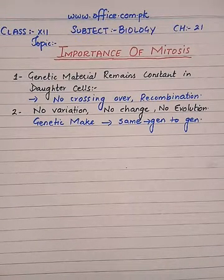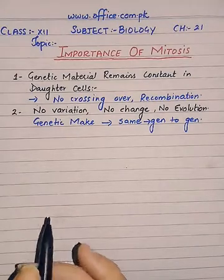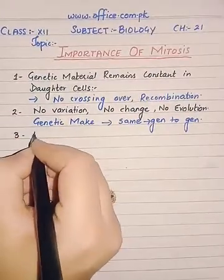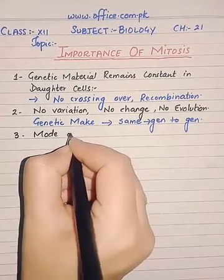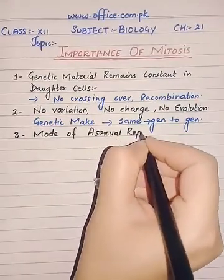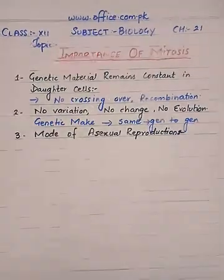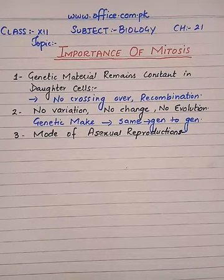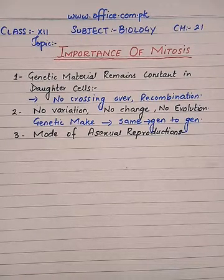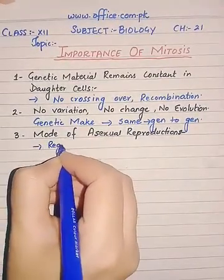The third point is this mode of asexual reproduction. There are certain organisms that reproduce asexually — those organisms can be plants or animals — so they undergo asexual reproduction and hence they use mitosis. In addition to asexual reproduction, regeneration — we have discussed the process of regeneration in detail in the previous chapters.